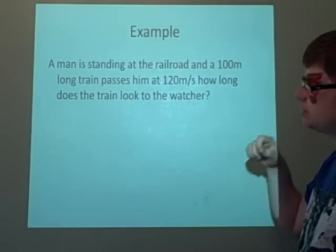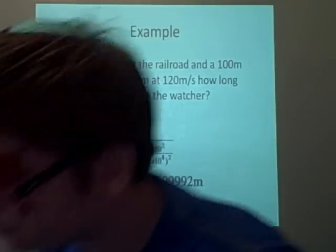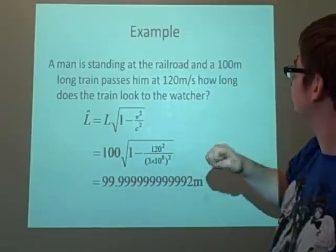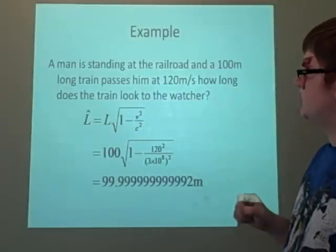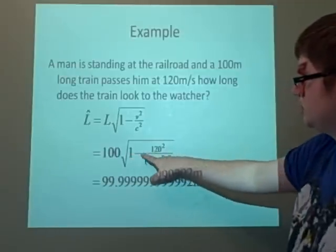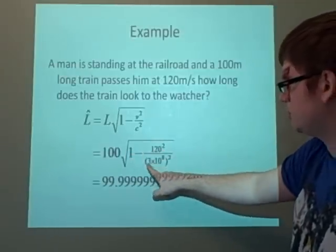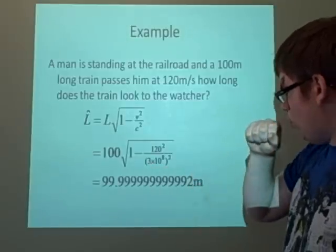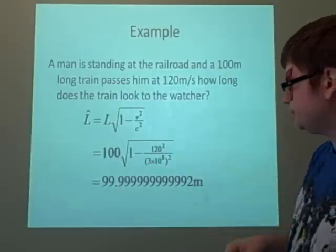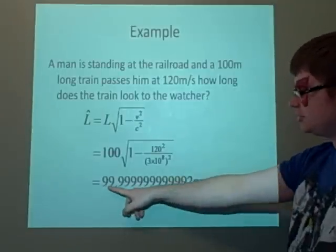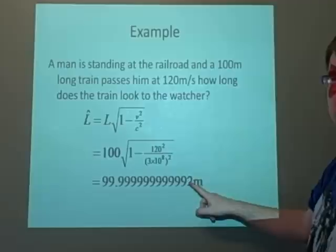So what we're going to look at first, we're just going to use our formula. This L-hat is L, and so on. We know the length of it is 100 meters, and the velocity's always 120 meters a second. So we've got 1 minus 120 squared over 3 times 10 to the 8, which is the speed of light, the rough guesstimate for it, squared. And this is the answer you get, so it doesn't look much shorter, but it will look shorter.